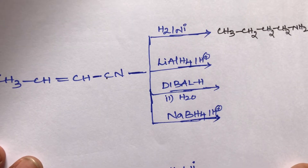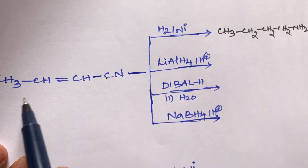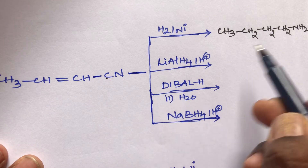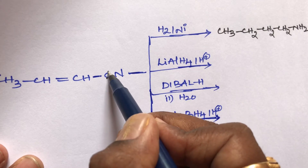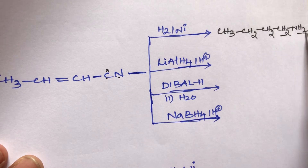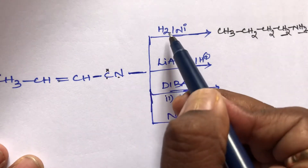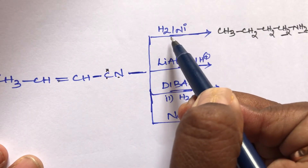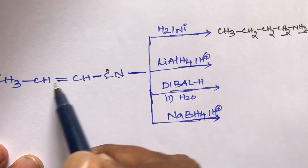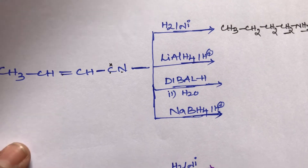H2 with nickel acts as a reducing agent in catalytic hydrogenation; it can reduce everything — double bonds, cyanogroups, acid groups, acid chlorides — the double bond converts to a single bond and the cyanogroup carbon becomes CH2 with N becoming NH2. This is the final product.